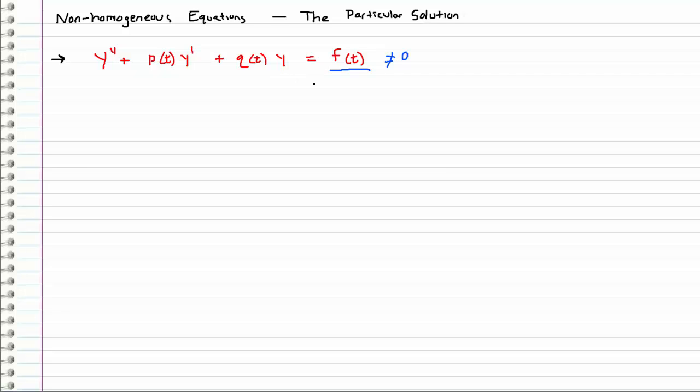We're going to take a look at how we're going to go about solving these. We're going to express our final solution as the homogeneous solution, yh, plus the particular solution, yp.